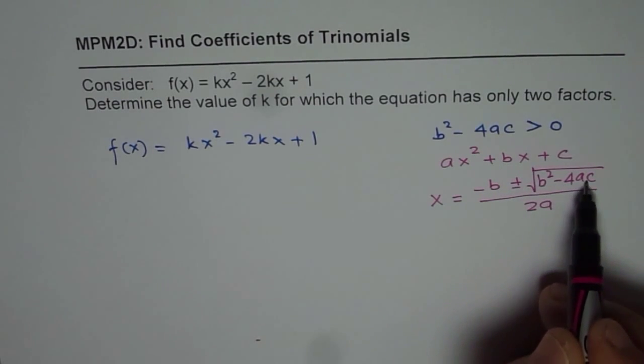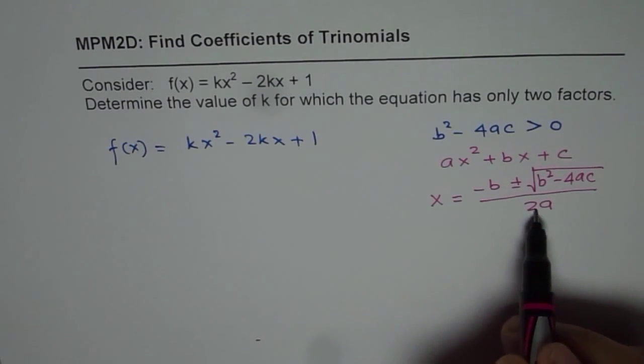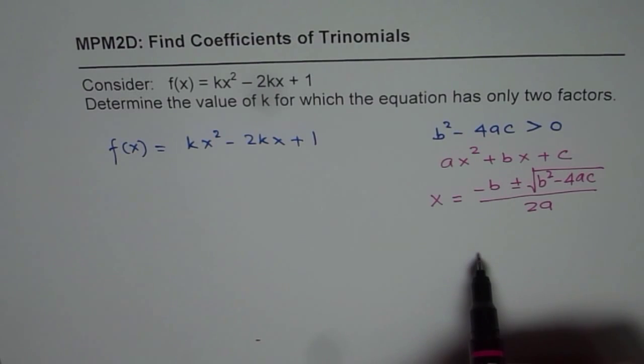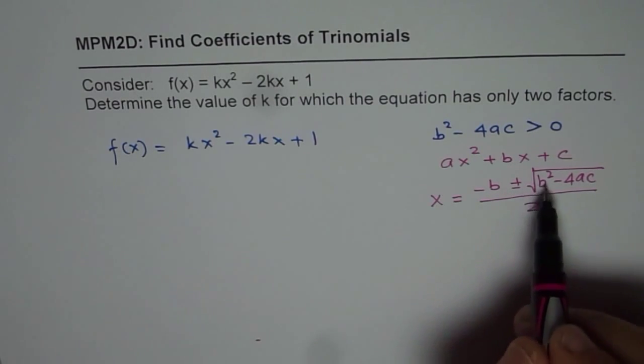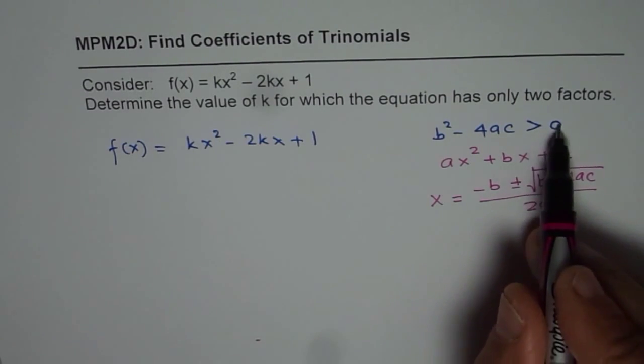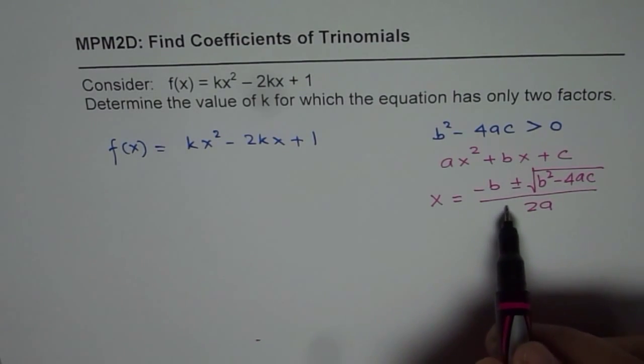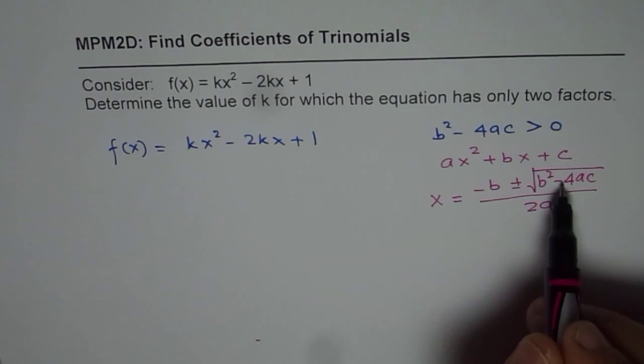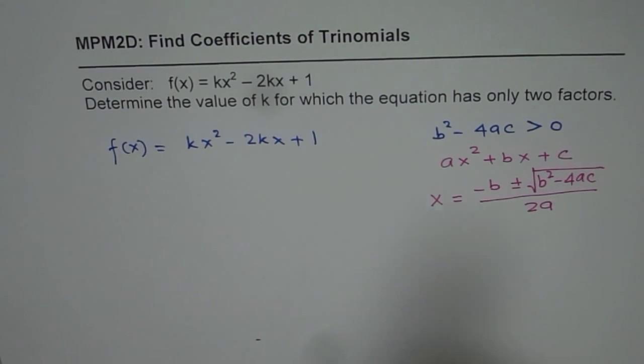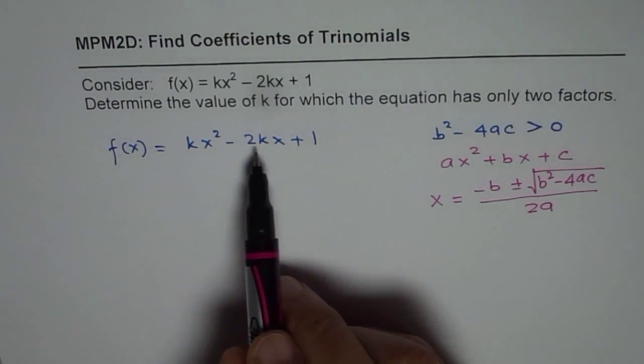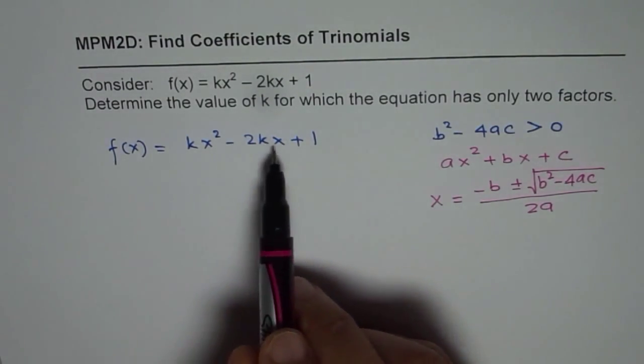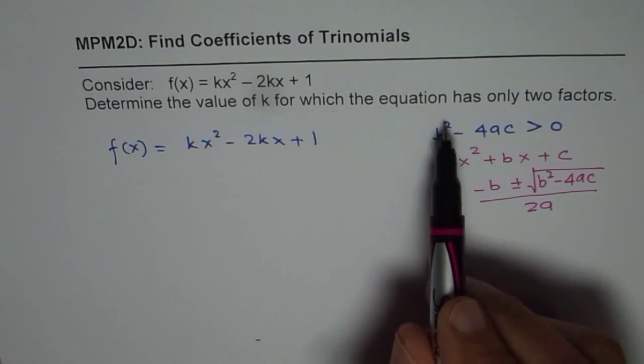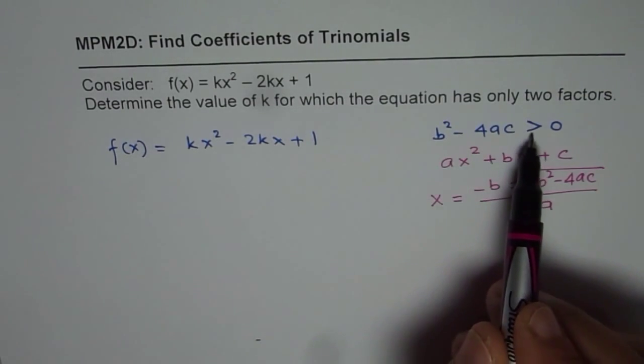Now if B squared minus 4ac is 0 you get just one factor or one root. If B squared minus 4ac is greater than 0 then we get two factors. But if it is negative then you do not get a real root. So we are looking for a value of k so that B squared minus 4ac is greater than 0.